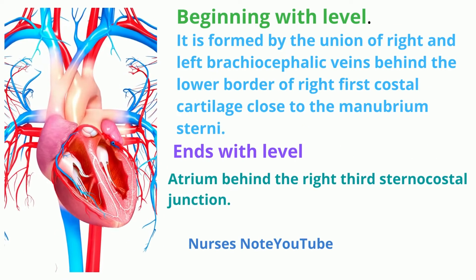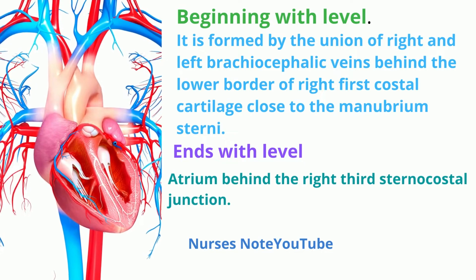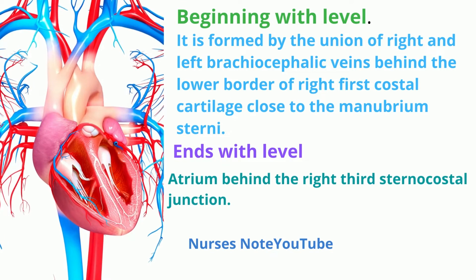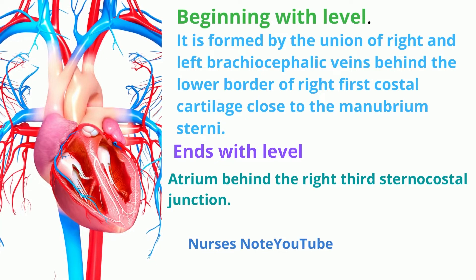Beginning level: it is formed by the union of the right and left brachiocephalic veins behind the lower border of the right first costal cartilage, close to the manubrium sterni. Ending level: it ends at the right atrium behind the right third sternocostal junction.